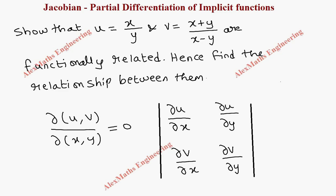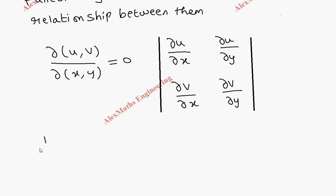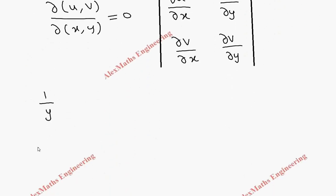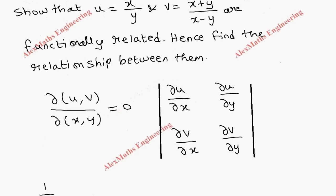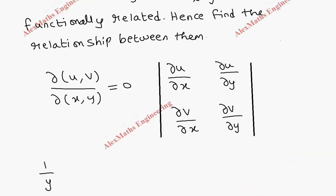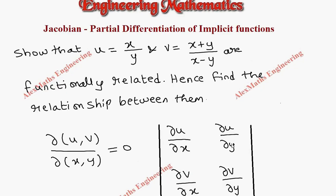We are going to evaluate the partial derivative of u with respect to x — here y is constant, so the first element is 1/y. Then for the partial derivative of v with respect to x, we follow the quotient rule: we write the denominator as it is, then differentiation of the numerator is 1, minus the numerator as it is, and differentiation of the denominator is 1, all divided by (x−y) whole square.